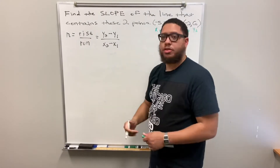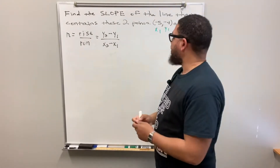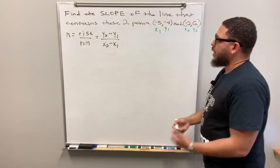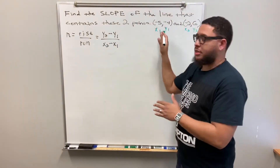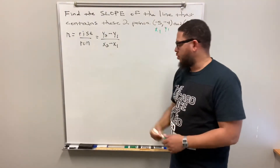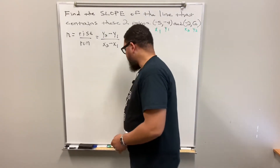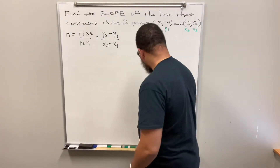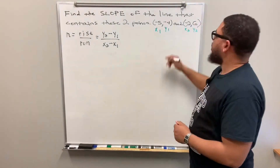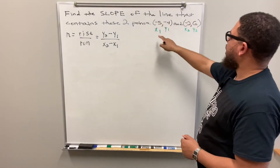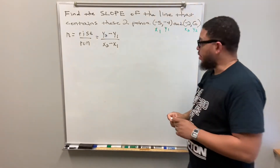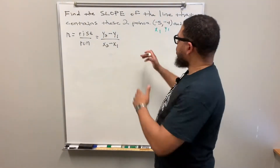Your first step is to label these four numbers. When you get the hang of this you might not need to label them and can just throw them into the formula, but until you reach that level of proficiency, I highly recommend you label each number: x₁, y₁, x₂, y₂.